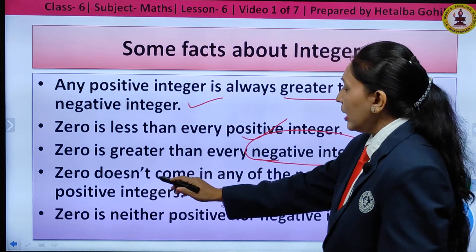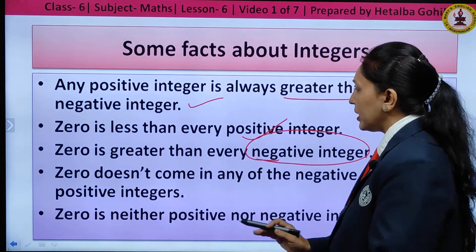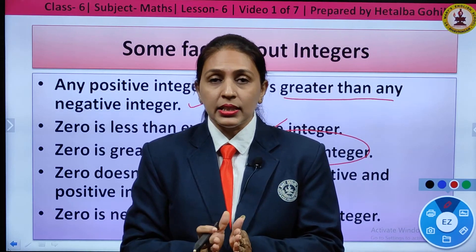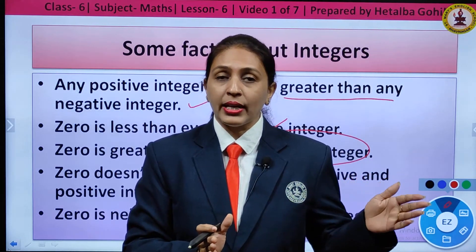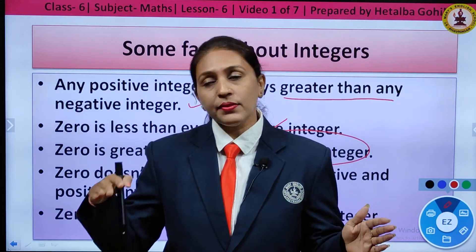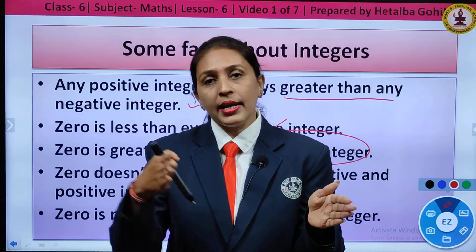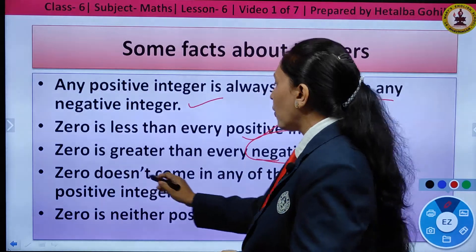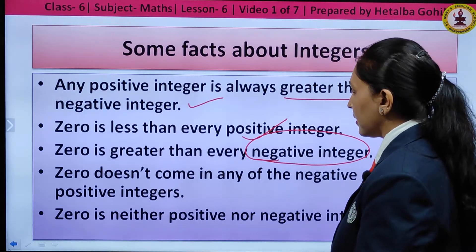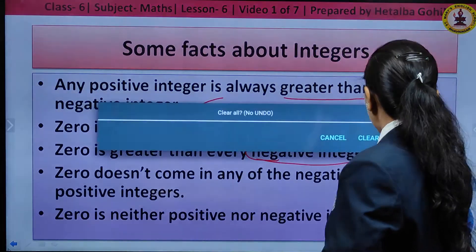Zero does not belong to either negative or positive integers. Zero is in the centre — it is neither positive nor negative. It is not included on the positive side or the negative side. So we call it neither a positive nor a negative integer.